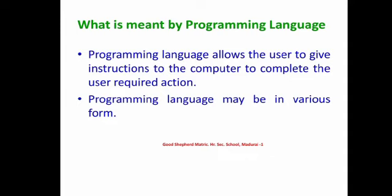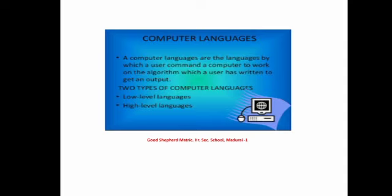Programming Languages may be in various forms. Computer Languages are the languages by which a user commands a computer to work on the algorithm. An algorithm is a set of instructions to complete a certain task, which a user has written to get an output. Output is the result of the action. Computer programming languages are broadly classified into two categories: low-level language and high-level language.